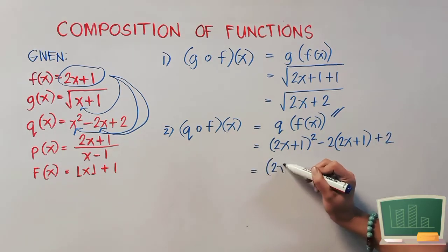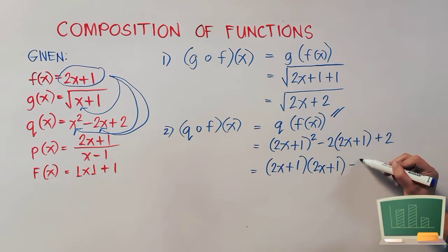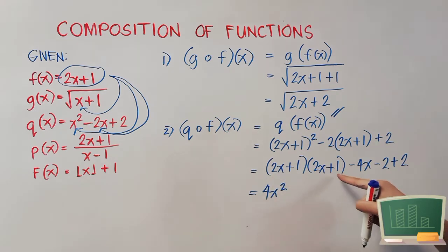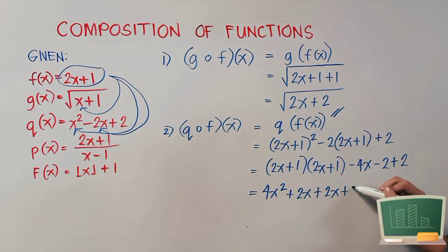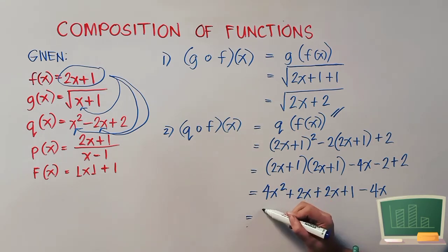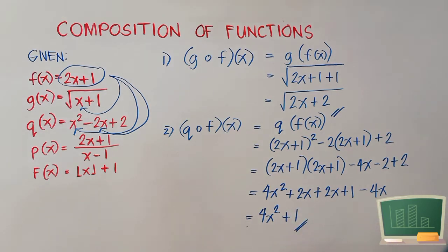This can be written as 2x plus 1 multiplied by itself, and then we'll distribute the 2, giving negative 4x, and negative 2 times positive 1 is negative 2, then copy plus 2. Doing the FOIL method, we have 4x squared, 2x times 1 is positive 2x, 1 times 2x is positive 2x, and 1 times 1 is positive 1. We copy negative 4x. Now combining like terms: 4x squared, 2x plus 2x is 4x minus 4x equals 0, so we're only left with plus 1. So 4x squared plus 1 is our final answer.